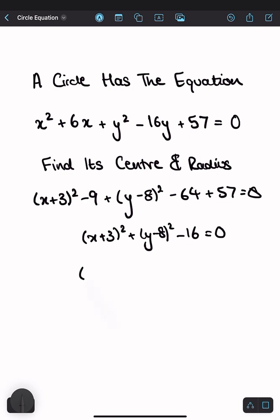And then if we rearrange this, we get x plus 3 squared plus y minus 8 squared equals 16.